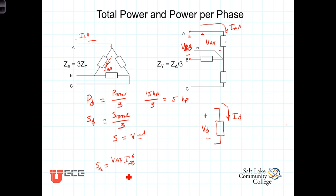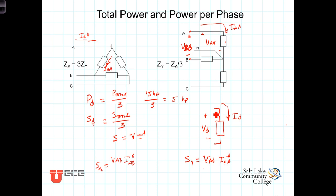In a Y connected load, the voltage across the phase is V_an and the current through it is I sub aA. So for a Y connected load, S sub Y per phase equals phasor V_an times I sub aA conjugate. We just have to be careful not to assume that because something is measured in volts it is actually the phase voltage, or that because something is measured in amps it is the current through the phase, before we do our calculations.